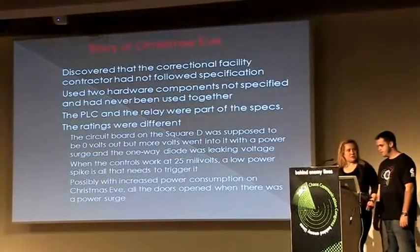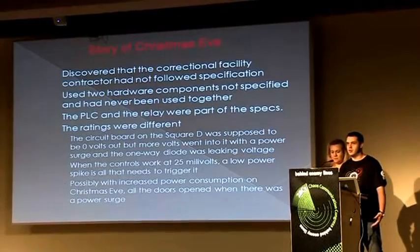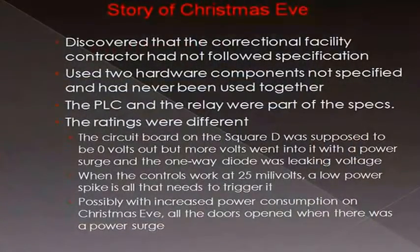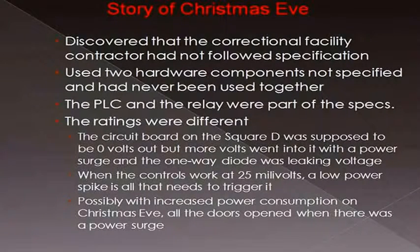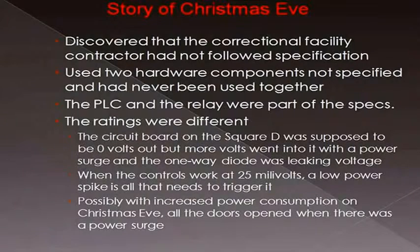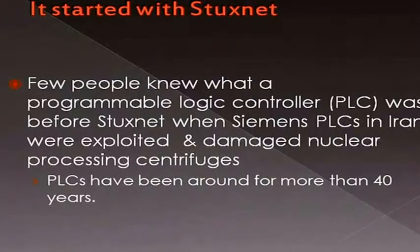Let me tell you the story of Christmas Eve. At one point, John was called by the warden of a prison on Christmas Eve — there was a problem. All the doors had come open on death row. It was theorized that maybe because of Christmas time there were different power draws, but what it really came down to is there were a couple of different parts that were out of spec, something was leaking voltage that it shouldn't have, and all the doors flew open on death row. People on death row don't really have anything to lose, so it's extremely dangerous.